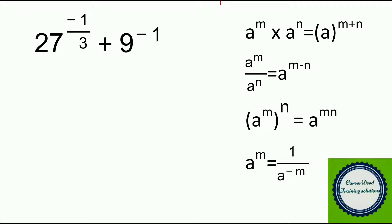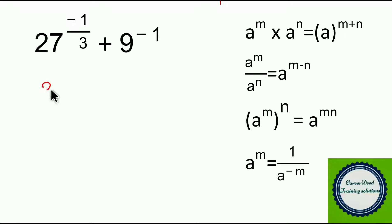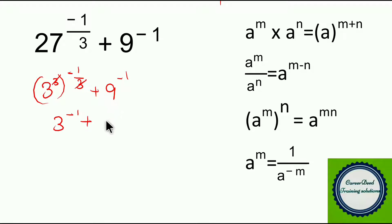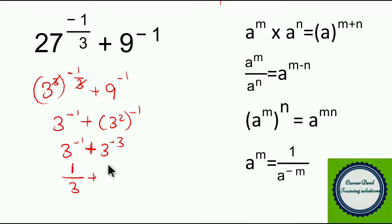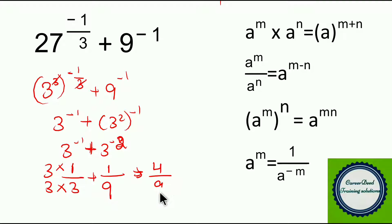Next question: 27^(−1/3) + 9^(−1). Work it out, then play. Write 27 as 3³: (3³)^(−1/3) + 9^(−1). Cancel the 3s to get 3^(−1). Write 9 as 3²: (3²)^(−1) = 3^(−2). So the expression is 3^(−1) + 3^(−2) = 1/3 + 1/9. Taking LCM = 9: 3/9 + 1/9 = 4/9. The answer is 4/9.